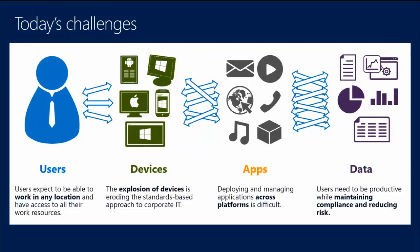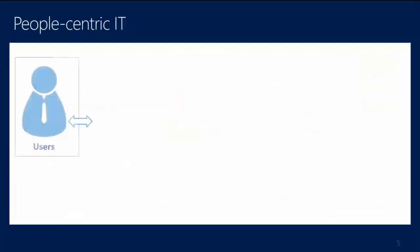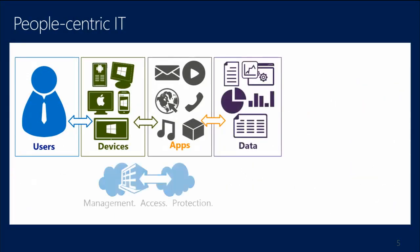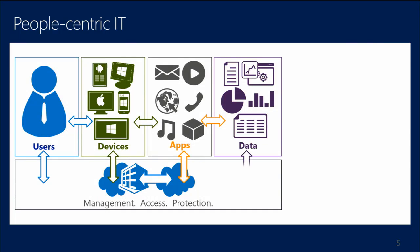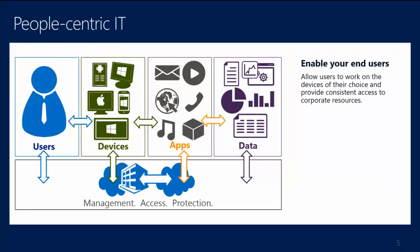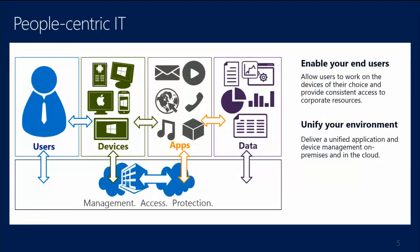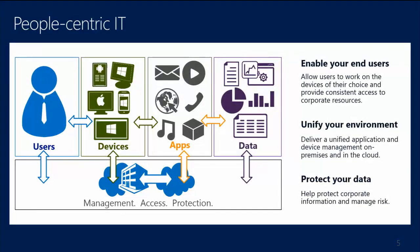Those are the four areas we look at, but it starts at the heart with the user. We want to provide good management, reliable and flexible access mechanisms, and corporate data protection. Enabling end users and giving them the tools they need, while maintaining a unified management environment that's scalable, flexible, consistent, and simple to use. That's the overview of people-centric IT and why we need to deliver these things, keeping the user at the heart of what we do.